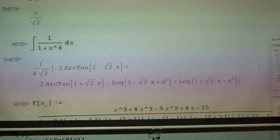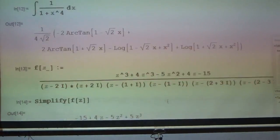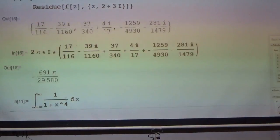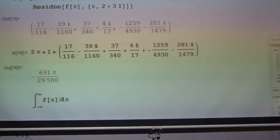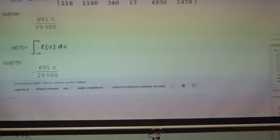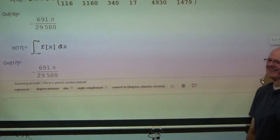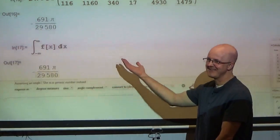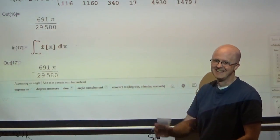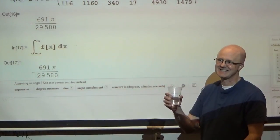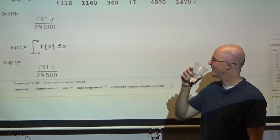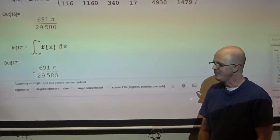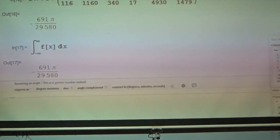The principal value would equal the regular value since this is a convergent improper integral. Plugging the real function directly into Mathematica's integrate command should confirm the answer. And indeed it does — the two results match. It's always a concern when a numerical approach disagrees, but here the complex analysis method works perfectly.